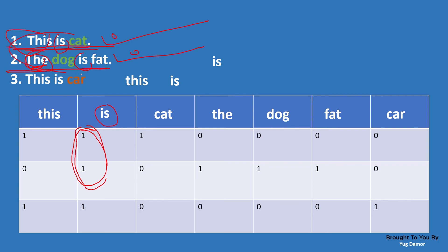Even if these two sentences are not similar, our method says they are similar. To overcome this issue, there is another method known as TFIDF — Term Frequency Inverse Document Frequency. I will explain that method in the next video. That is it for this video. I hope you guys enjoyed it. Feel free to like this video if you liked it, share it if you found it valuable, and I will see you guys in the next video. Bye-bye.